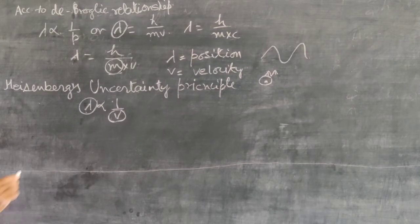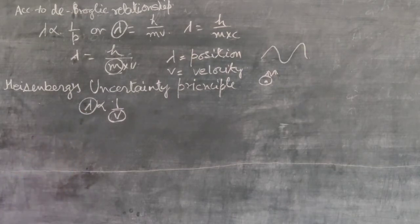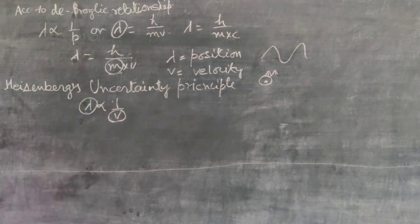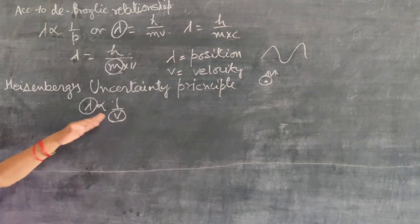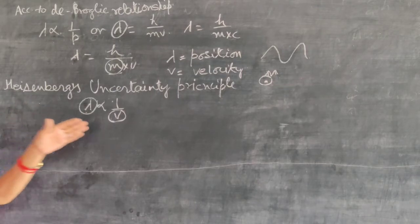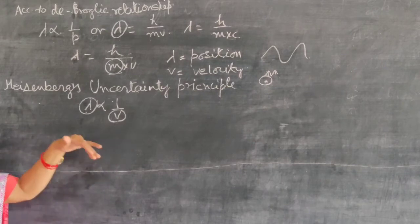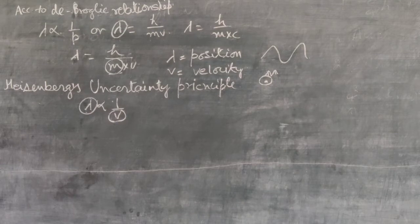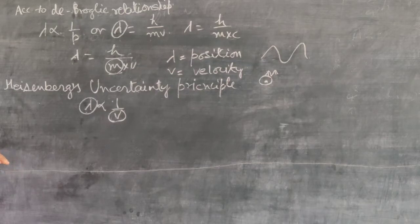For example, if there is an increase in the velocity, then there will be a decrease in the wavelength. And similarly, when the wavelength increases, then there is a decrease in the velocity. So this is the Heisenberg uncertainty principle. For the subatomic particle, the velocity and the position cannot be determined precisely and simultaneously. That is called Heisenberg's uncertainty principle.